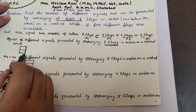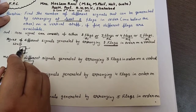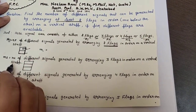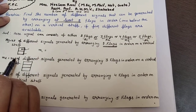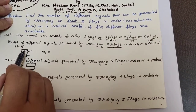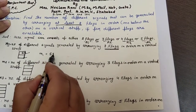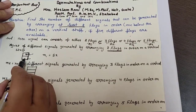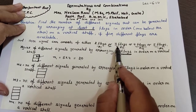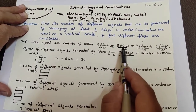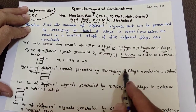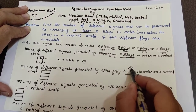So M1 is the number of signals generated by arranging two flags in vertical form. Using two flags from five, M1 is the number of ways. My second event M2 is the number of different signals generated by arranging three flags at a time, selected from the five different flags available.